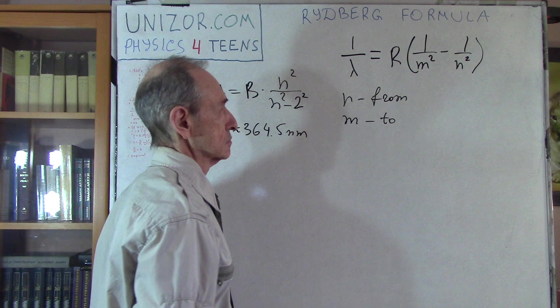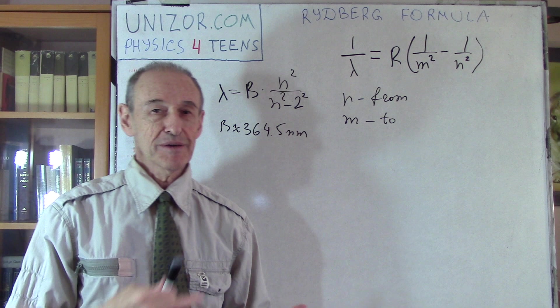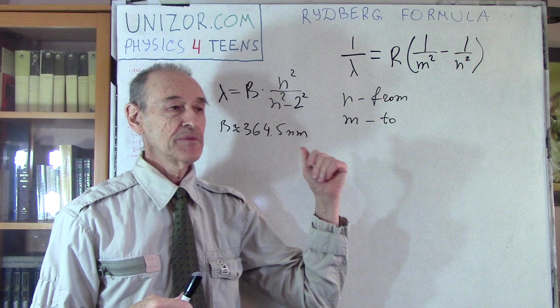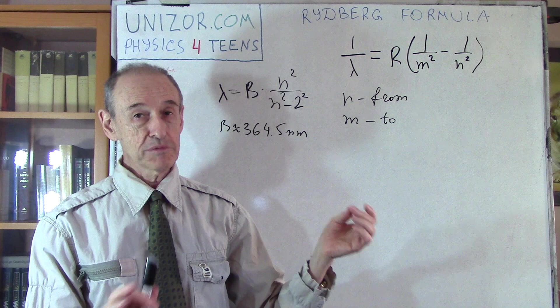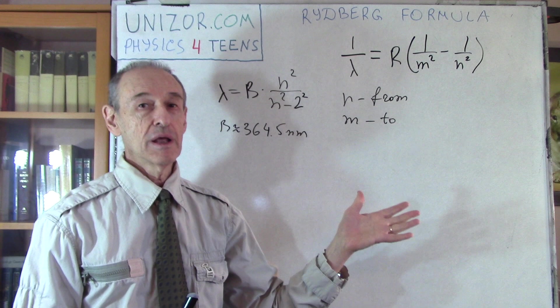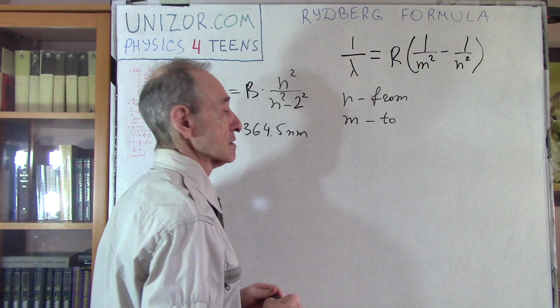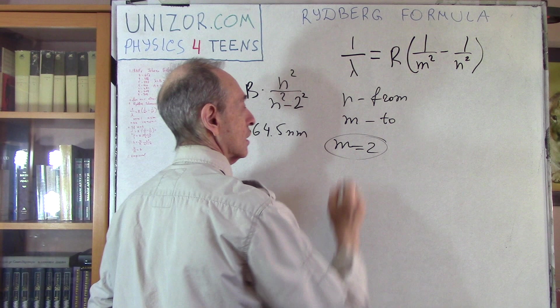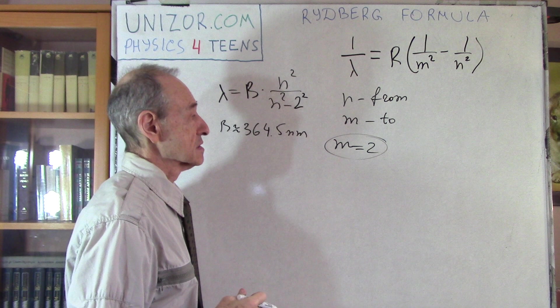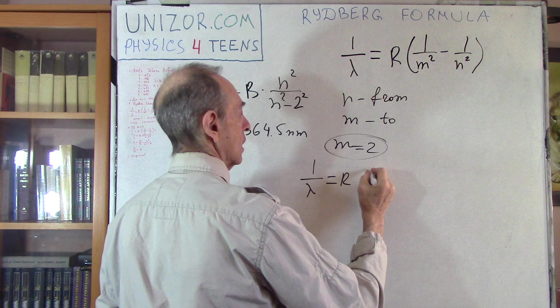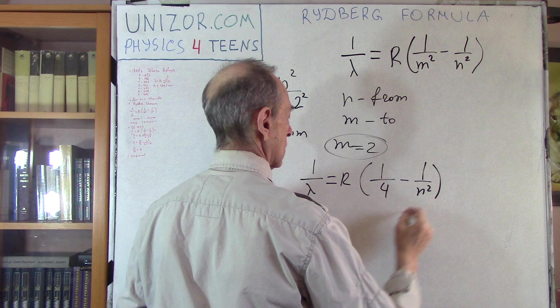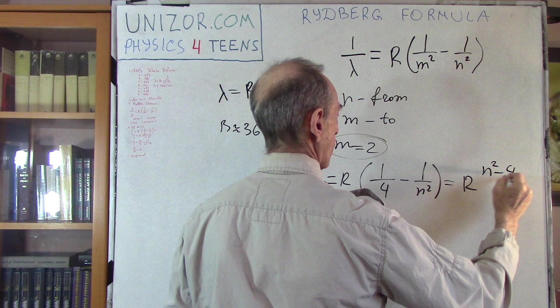1 over lambda equals R times (1 over M squared minus 1 over N squared). Let's use M here, and N here, where N is from, and M is to. N is an orbit number. From our perspective, N is an orbit number where electron comes from, and M is the orbit number where electron comes to. Now, you see, this is slightly different than this, but to tell you the truth, it's exactly the same thing, because if M is equal to 2, so the orbit it comes to is number 2. What do we have here? 1 over lambda equals R, 1 fourth minus 1 over N square, which is R times N square minus 4 divided by 4 N square, right?